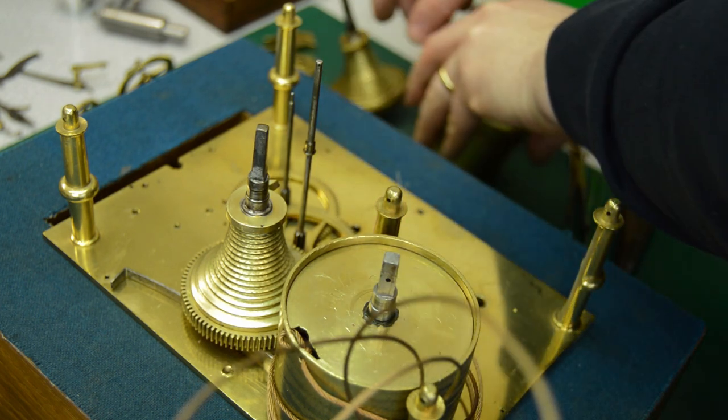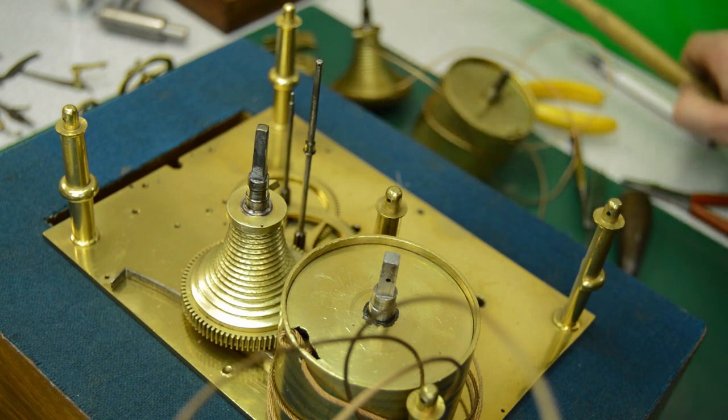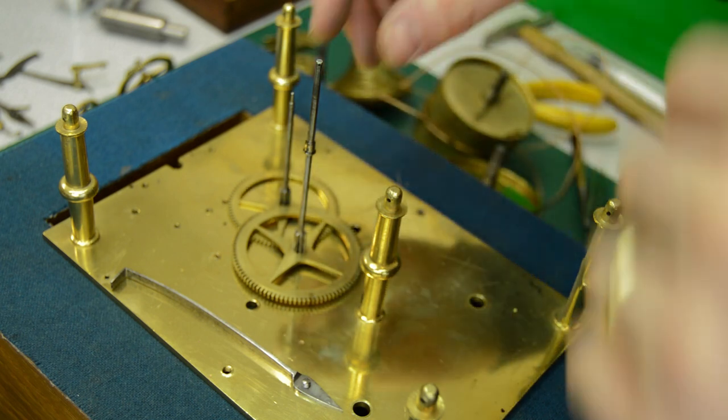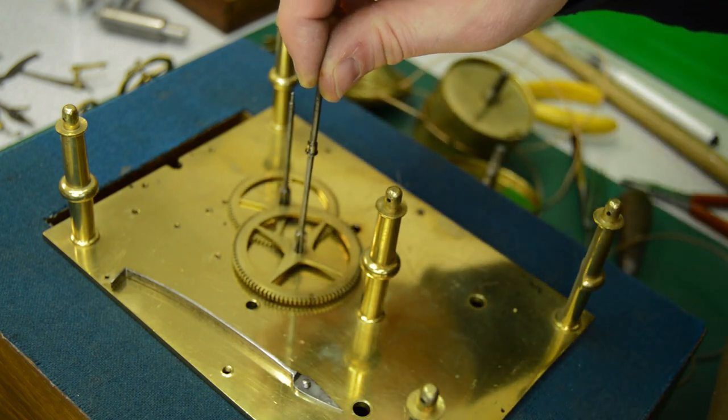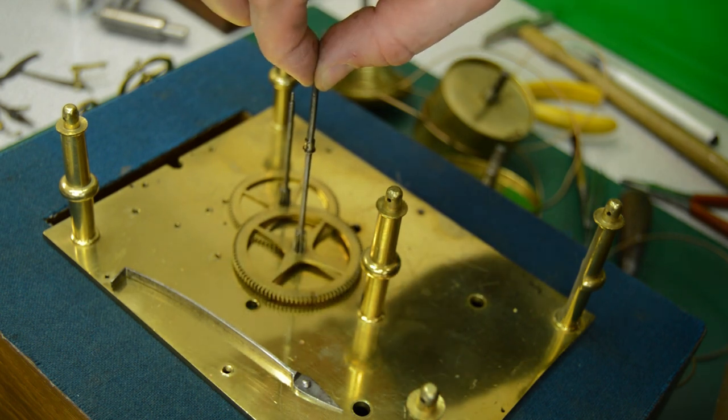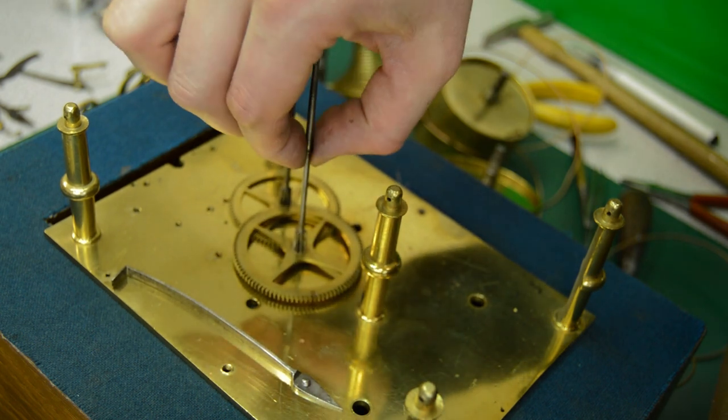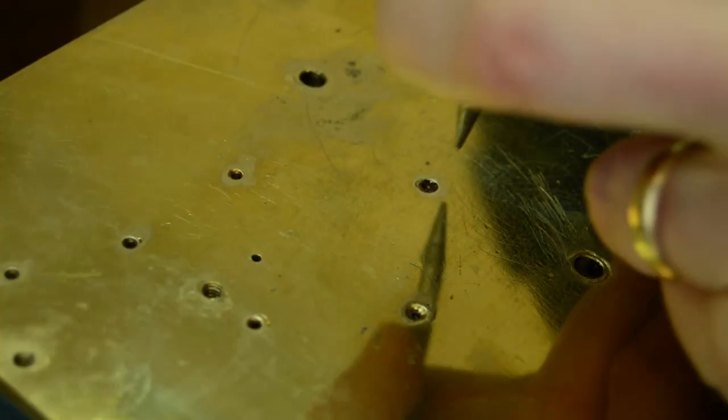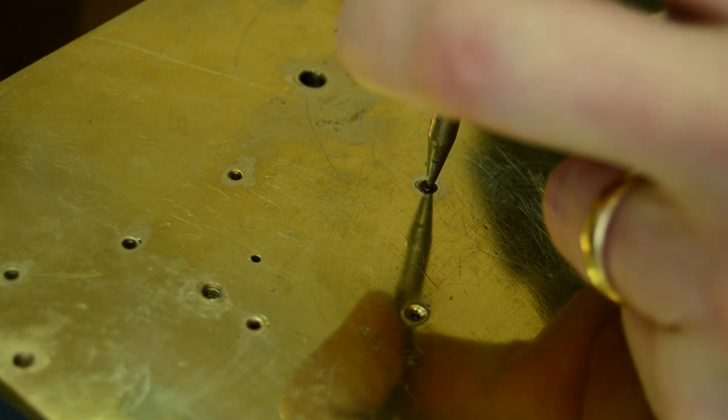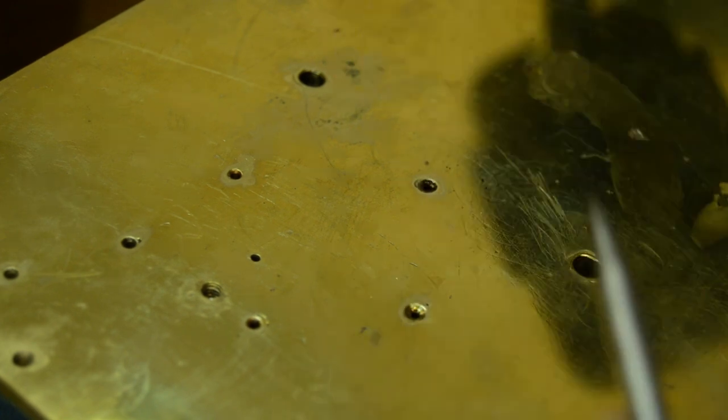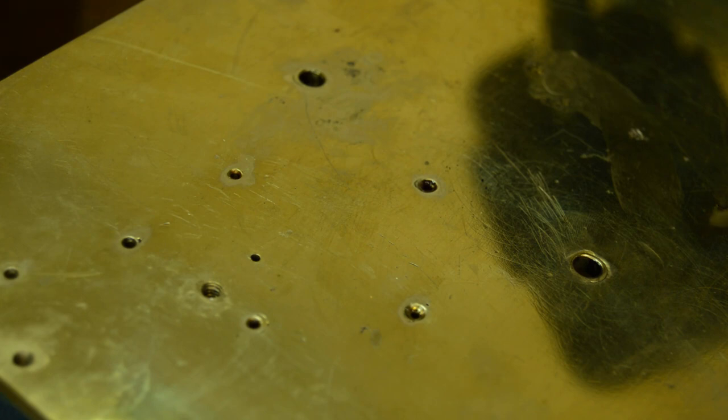So removing the fuses and barrels gives access to the wheels, in this case the centre and third wheel of the going train. And here is the first serious problem that we've encountered in the clock. The centre wheel is absolutely solid into the plate, required tapping through from the backside. So a couple of short sharp taps with a punch against the back of the pivot itself and the centre wheel just drops out.